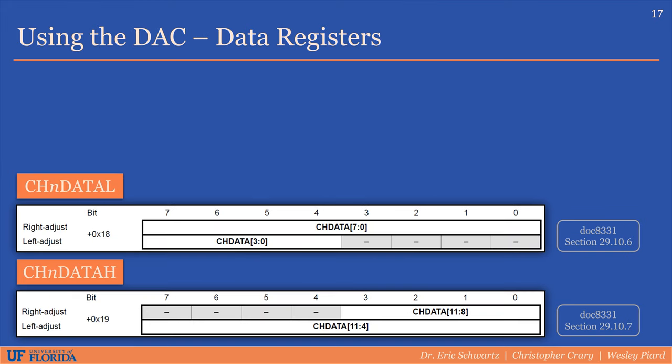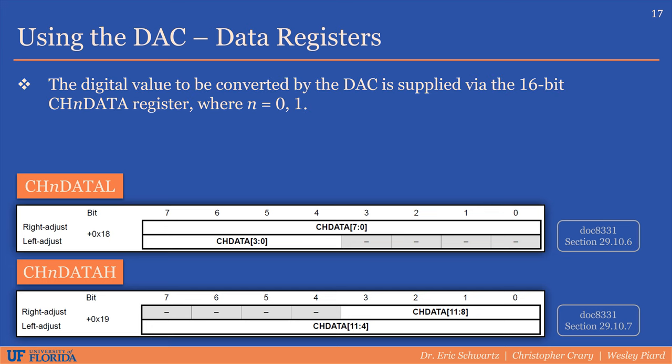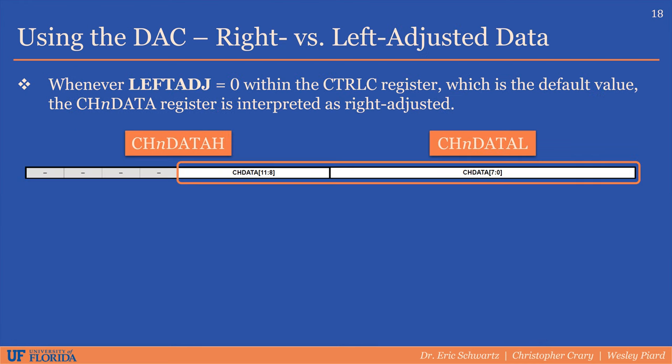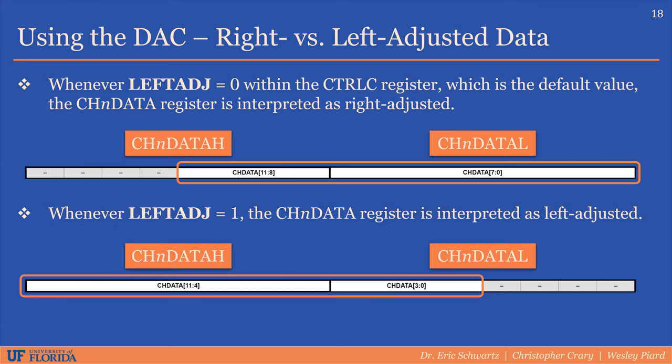To initiate a digital to analog conversion within the XMega, the channel 0 or channel 1 data registers must be written to. Each of these data registers consists of two 8-bit registers: channel 0 or 1 data high and low. There are two different configurations — one for when the data is right adjusted and another for when the data is left adjusted. By default, since the left adjusted bit is 0, the data is interpreted as right adjusted, meaning the 12-bit digital data is in the lower 12 bits of the data register. Conversely, when the left adjusted bit is 1, the 12 bits of digital data must be in the upper 12 bits of the data register.